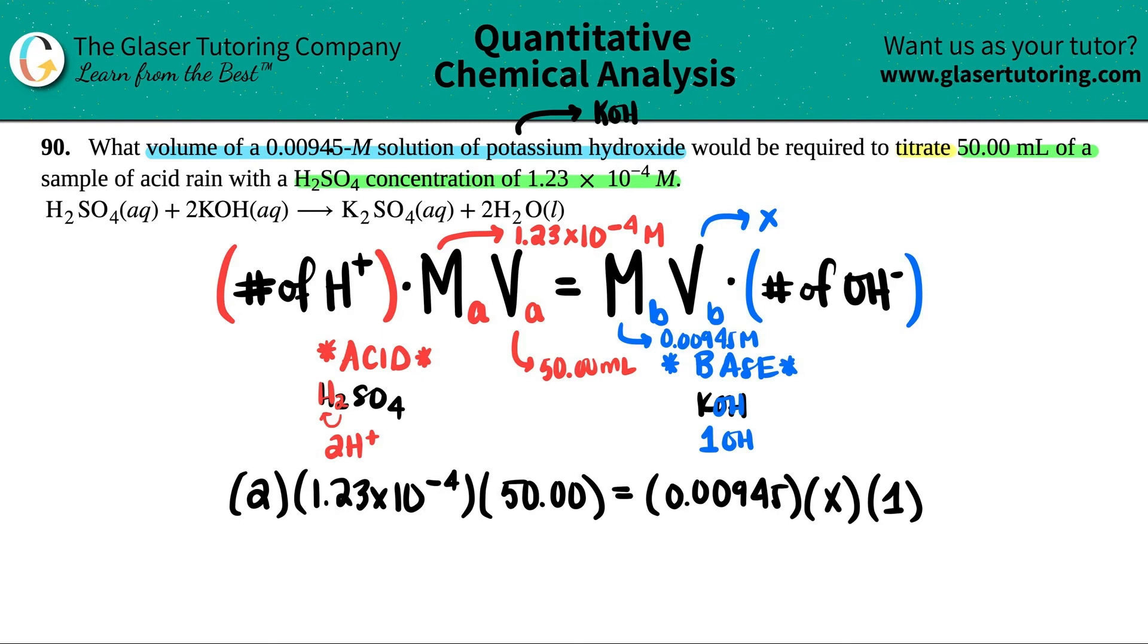So let's just simplify this. This side would just be 0.00945X. And then get your calculator out, two times 1.23 times 10 to the negative fourth, and times by 50. Syntax error. Oh, I see it. Love when that happens. Okay, so here we have 0.00945X. That kind of makes sense. 0.0123.